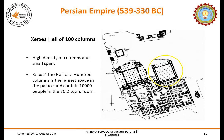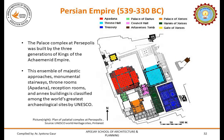In the palace complex of Persepolis, perhaps the most interesting architectural marvel is the Hall of Hundred Columns, possibly built by King Xerxes. It has a high density of one hundred columns with a very small span, and Xerxes' Hall of Hundred Columns is the largest space in the palace, capable of containing about 10,000 people over an area of around 76.2 square meters. The palace complex at Persepolis was built by three generations of kings of the Achaemenid Empire. This ensemble of majestic approaches, monumental stairways, throne rooms — also known as apadanas — reception rooms and annexure buildings is classified among the world's greatest archaeological sites by UNESCO.